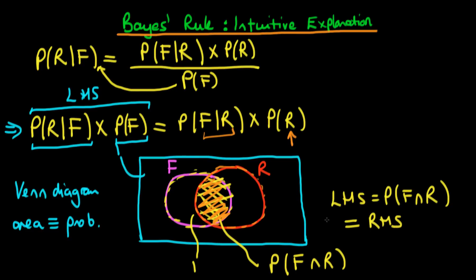So that's the intuition behind Bayes' rule. Essentially, there are two different ways of arriving at this intersection area. There is the way where we start off with it being forecast to rain and then work our way down to the overlapping area. And there is the second way where we start off with it raining, and then use the conditional probability that it is forecast to rain, given that it does rain, to again arrive at this overlap region.